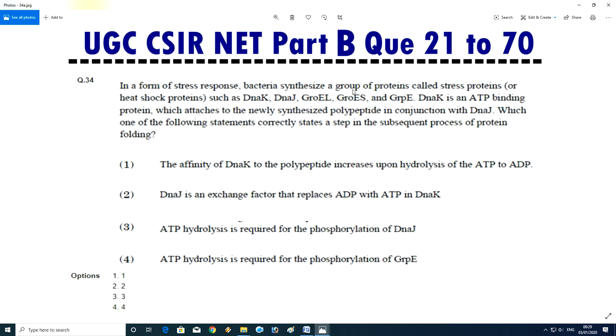Question No.35 - In a form of stress response, bacteria synthesize group of protein called stress protein or heat shock protein, such as DnaK, DnaJ, GroEL, GroES and GrpE. DnaK is an ATP binding protein which attach to newly synthesized polypeptide in conjugation with DnaJ. Which one of the following statement correctly states the steps in subsequent process of protein folding. The affinity of DnaK for polypeptide increase upon hydrolysis of ATP to ADP. DnaJ is exchange factor that replace ADP with ATP in DnaK. ATP hydrolysis is required for the phosphorylation of DnaJ. ATP hydrolysis is required for phosphorylation of GrpE. Answer is one, affinity of DnaK.